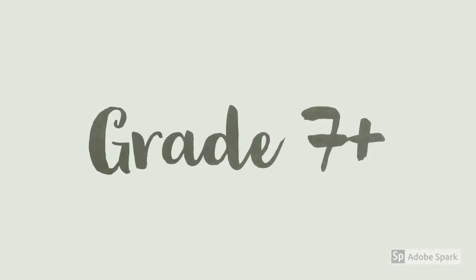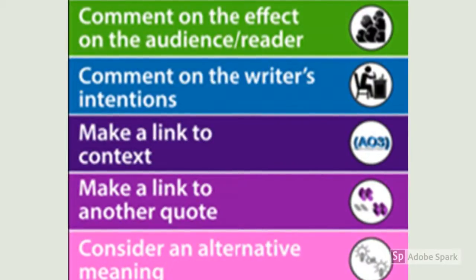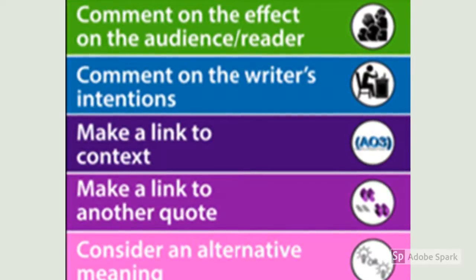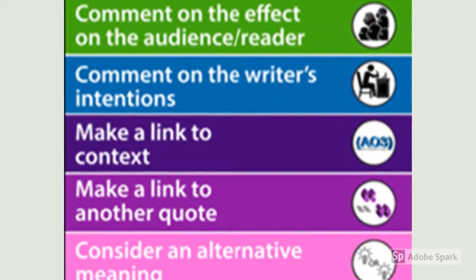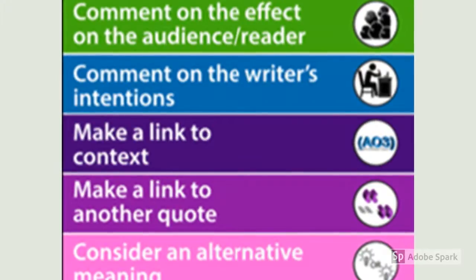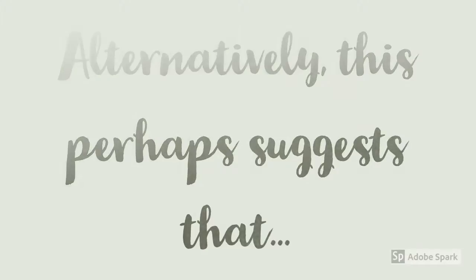I've saved the last strategy until the end because this is the one that pupils need to master if they are aiming for the higher grades. This is where you consider an alternative meaning, which proves to the examiner that you understand that one quotation can have more than one interpretation, and it demonstrates that you are tentative and careful within your analysis. Your sentence could start with 'alternatively, this perhaps suggests that...' and then you fill it in with a different interpretation of what else your quote could suggest.